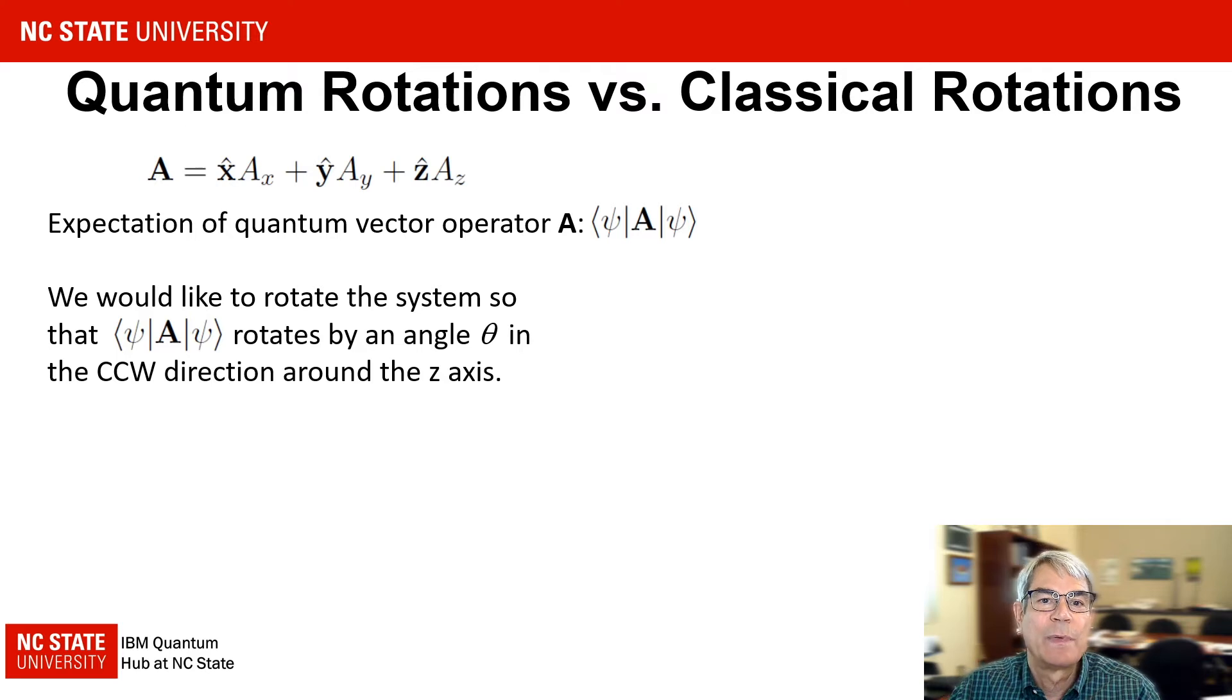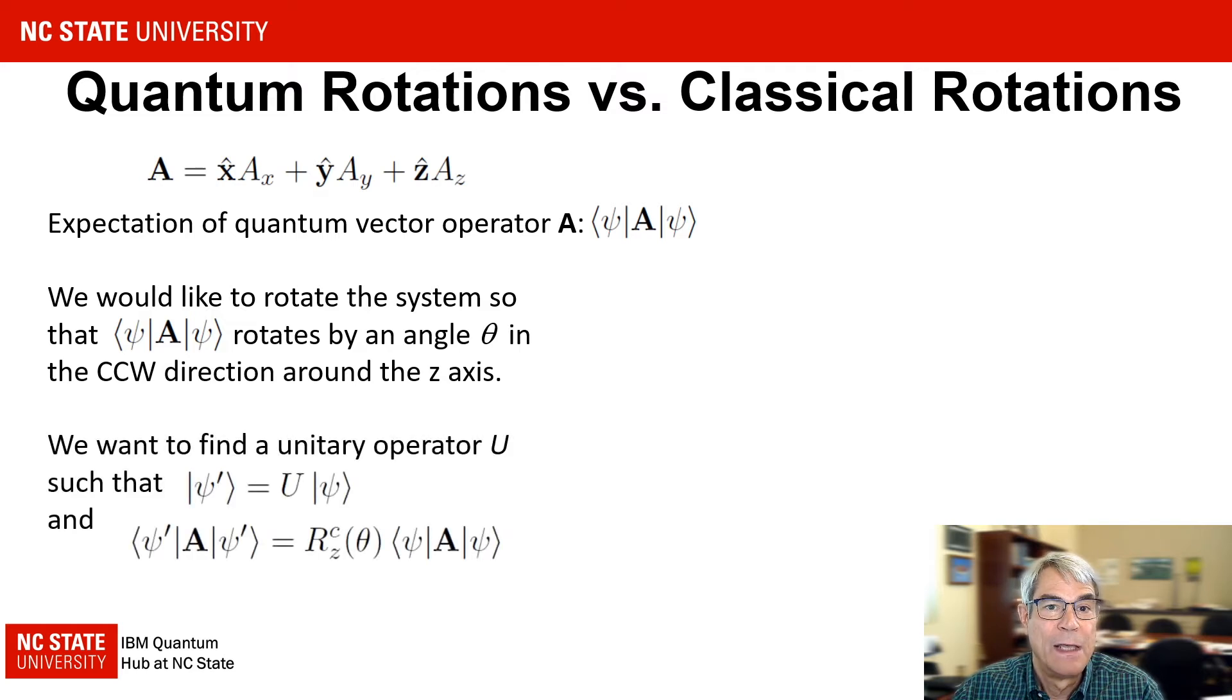Now suppose we would like to rotate the system so that the expectation vector rotates by an angle theta in the counterclockwise direction around the z axis as we had in our illustration. We want to find a unitary operator U that gives the rotated state psi prime when U is applied to psi and the expectation evaluated with a rotation state is the same as what would be obtained by applying the classical rotation matrix to the unrotated expectation vector.